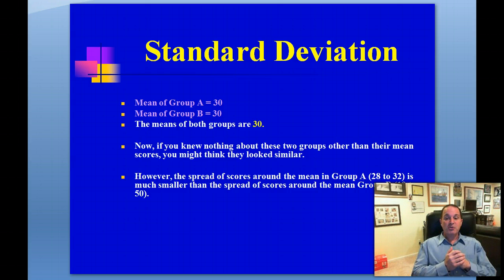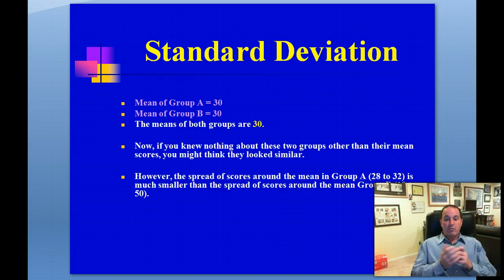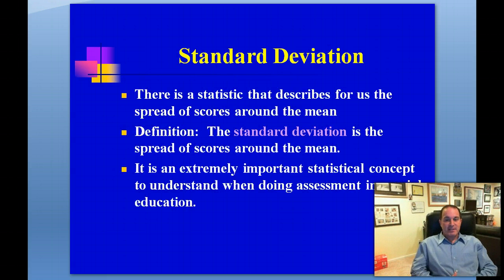The spread of the scores around the mean of 30 in Group A — 28 to 32 — is much tighter, much smaller than how the scores were spread around the mean in Group B, which is 10 up to 50. We have a statistic that describes the spread of scores around the mean, and that is known as the standard deviation. Standard deviation is the spread of scores around the mean, and it's a very important statistical concept when doing assessment in special education.